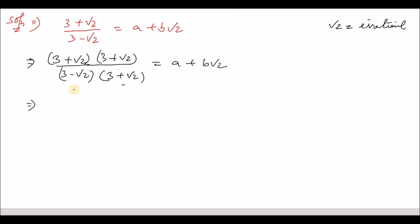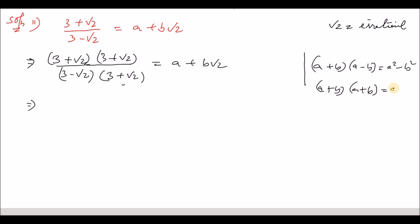So this implies a plus b into a minus b equals a squared minus b squared — this is the formula we need. For the numerator we have a plus b into a plus b, which equals a plus b whole squared. Therefore we write 3 plus root over 2, whole squared in the numerator.